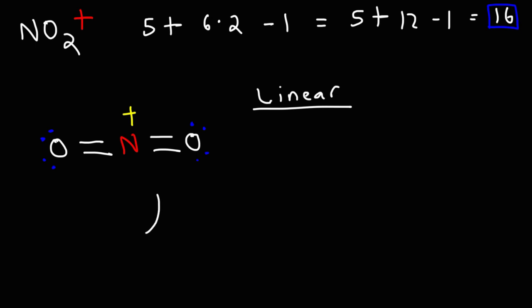The hybridization along the central nitrogen atom is sp. It's sp hybridized. An sp hybrid orbital is basically a mixture of one s orbital and one p orbital. And the bond angle for a linear molecular shape is 180 degrees. That's the bond angle of a straight line.